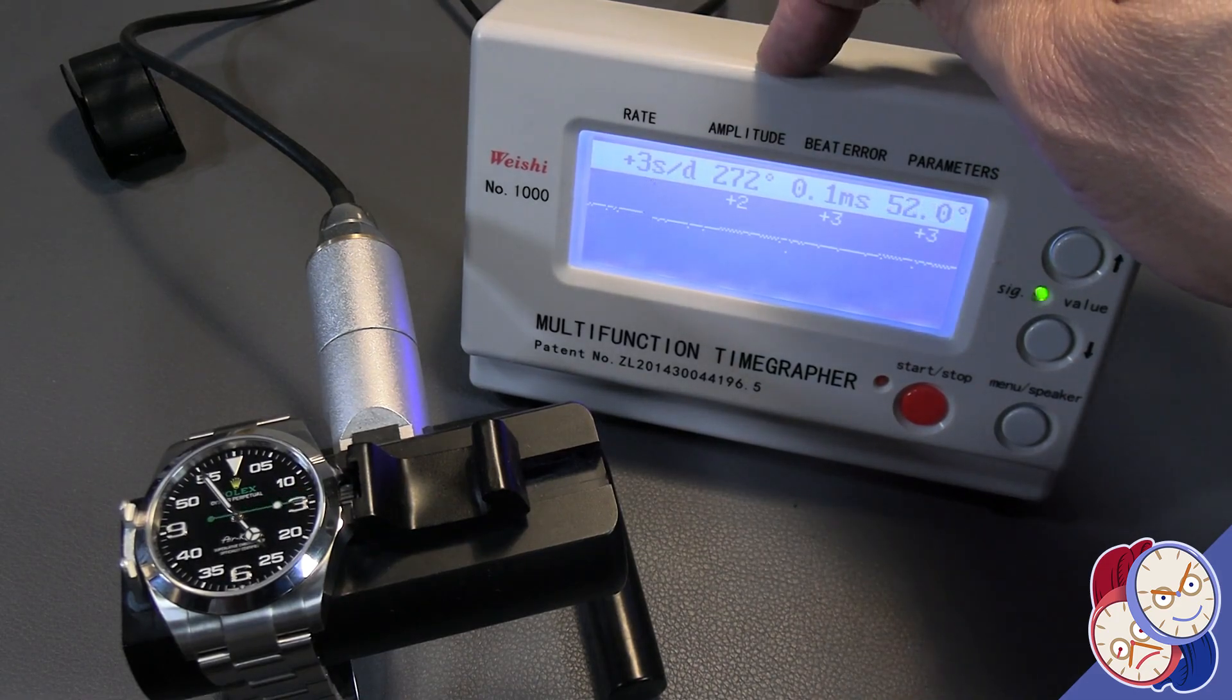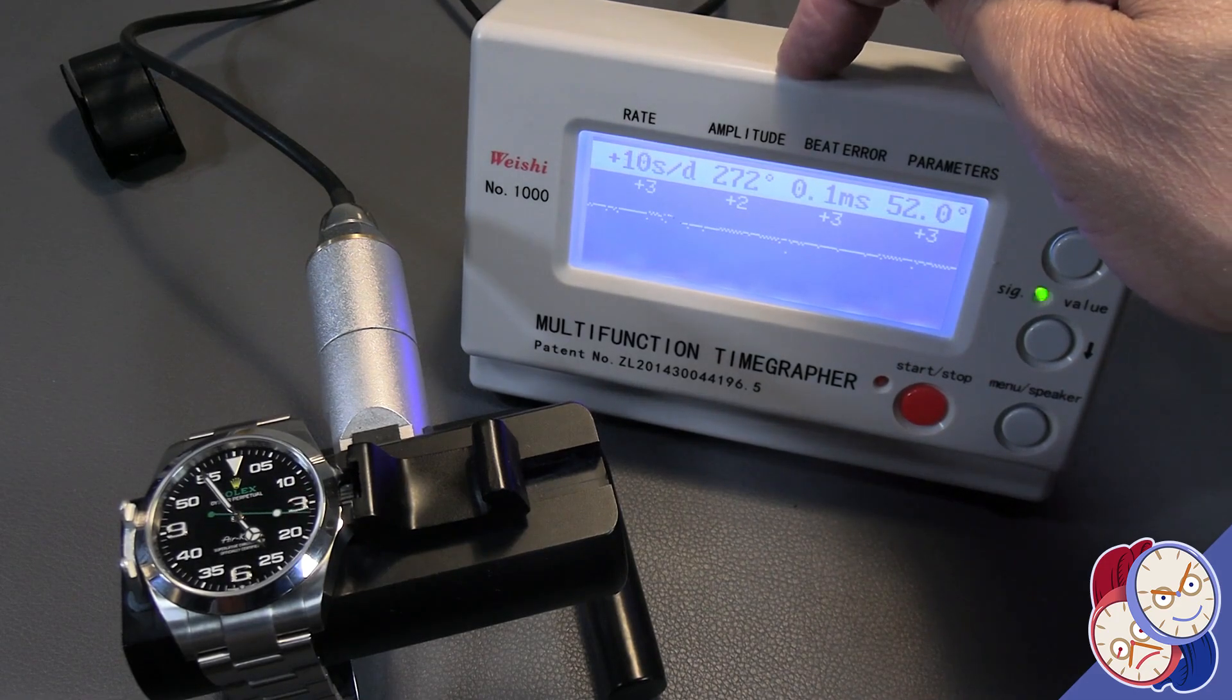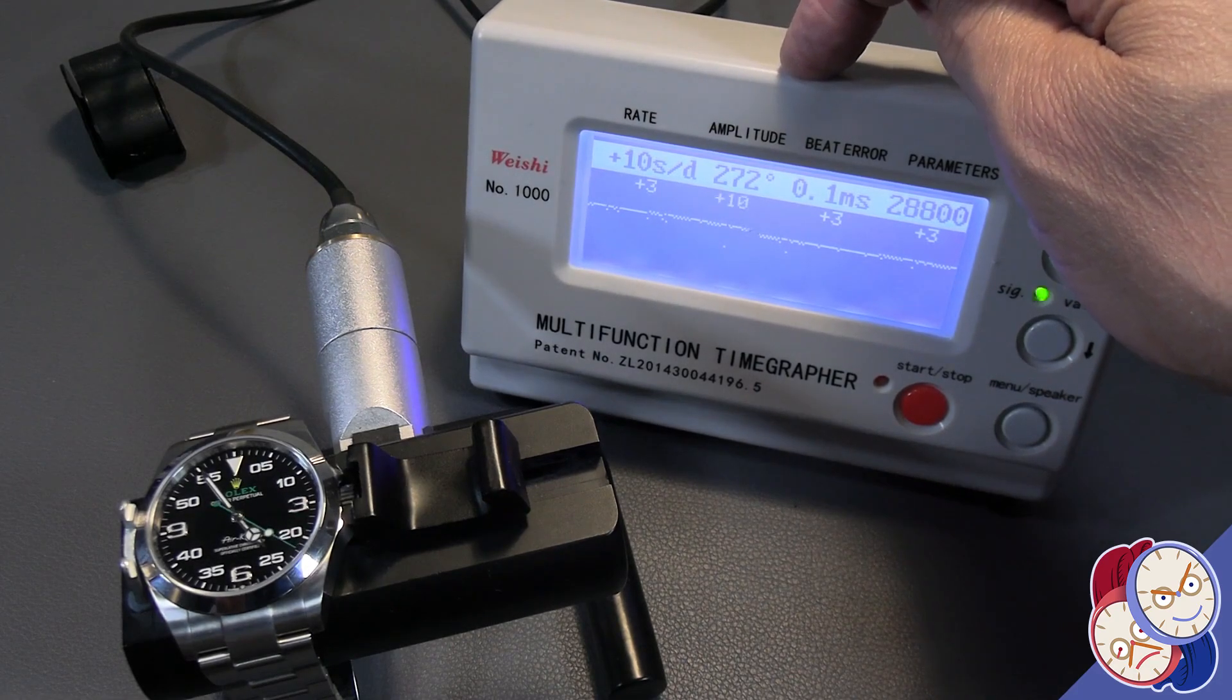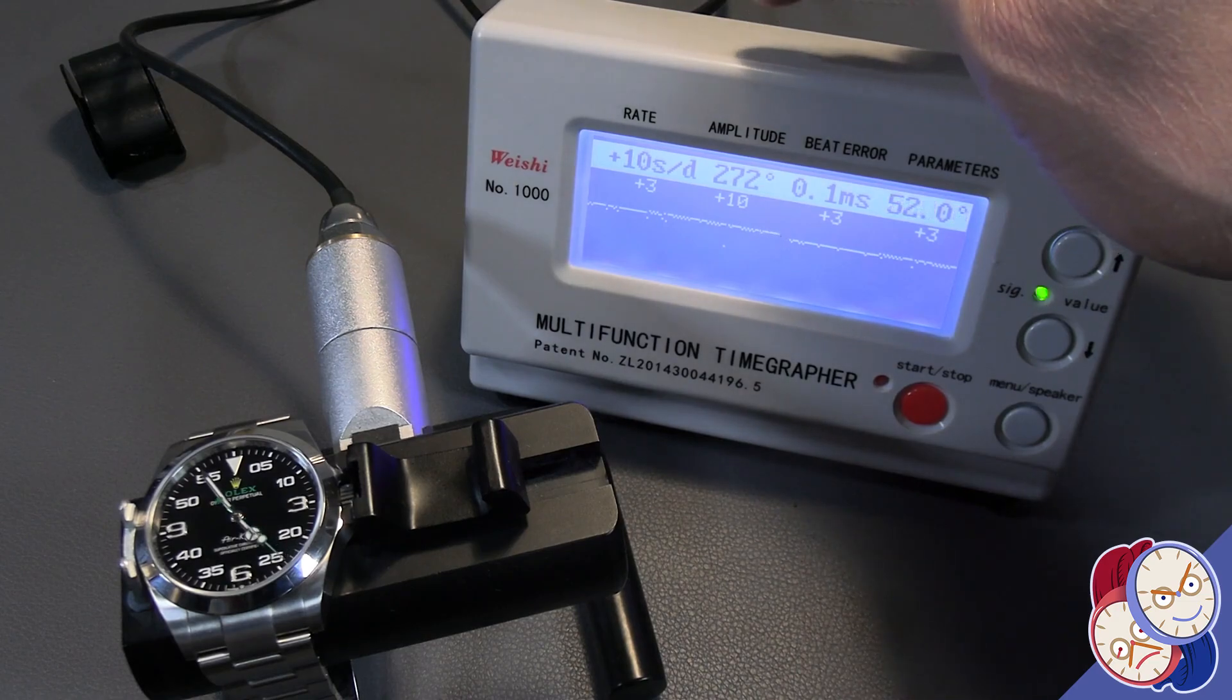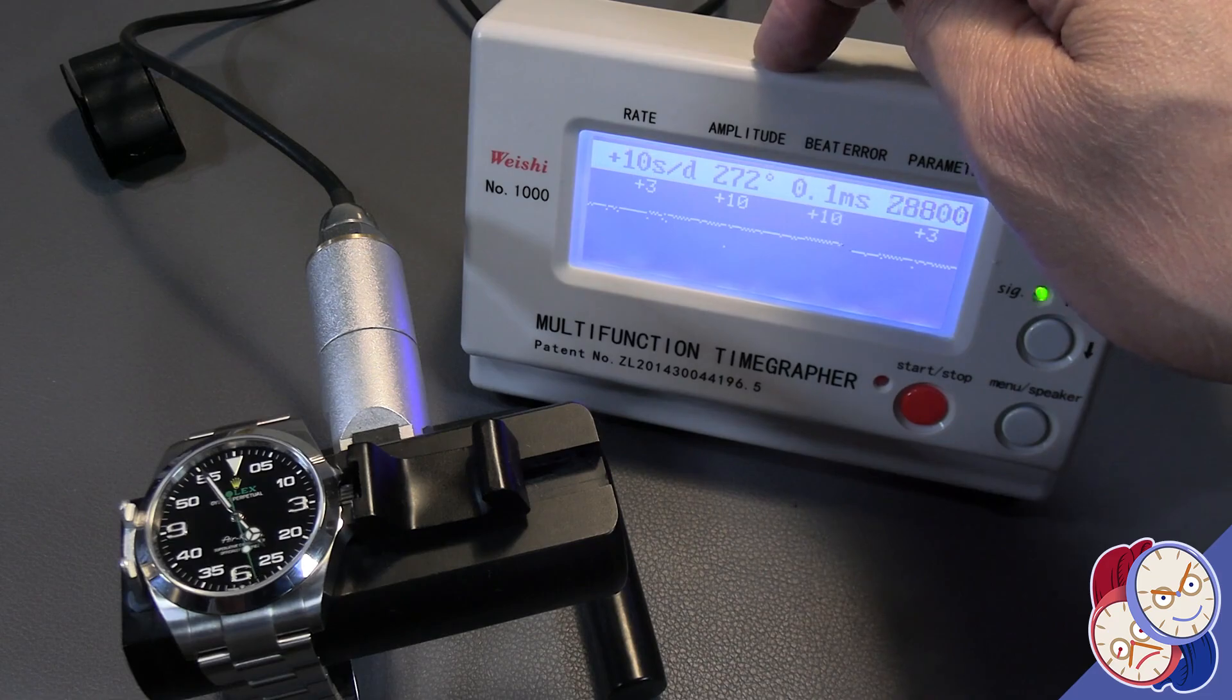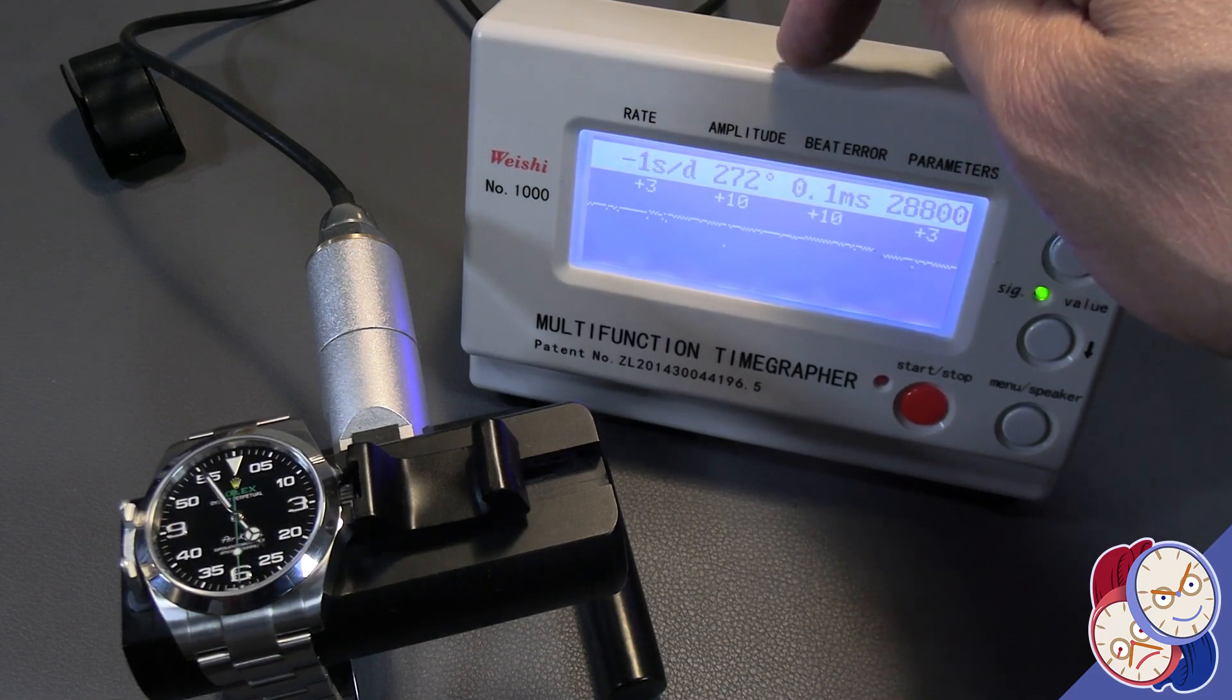The amplitude is how far back and forth the balance wheel swings with each beat, kind of like how much punch is behind the tick. You want an amplitude over 270 degrees. If it starts dropping below, say, 250, you should definitely have your watch looked at.